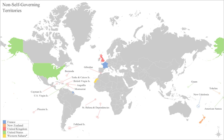Unlike a puppet state or satellite state, a colony has no independent international representation, and its top-level administration is under direct control of the metropolitan state. The term 'informal colony' is used by some historians to refer to a country under the de facto control of another state, although this term is often contentious.